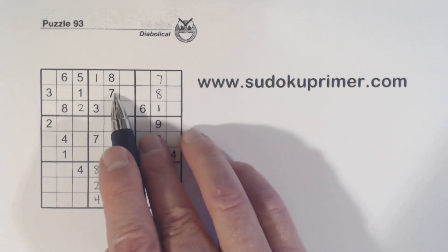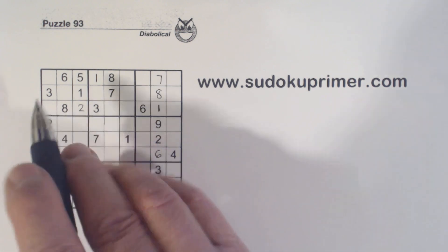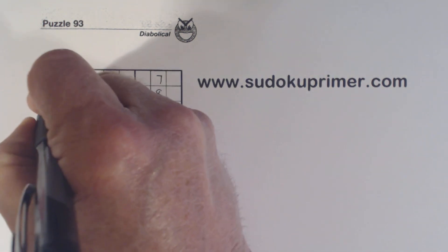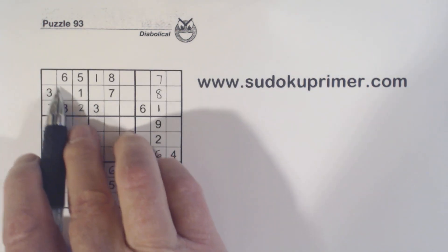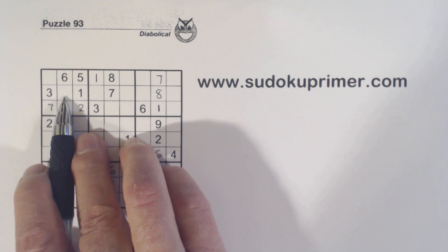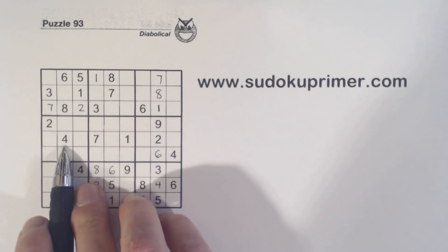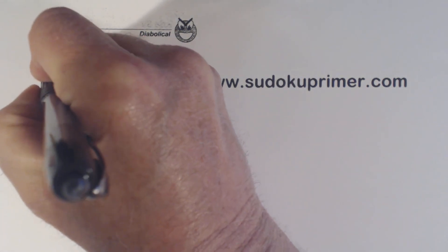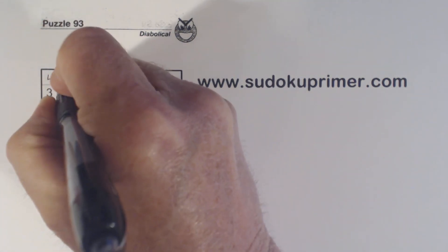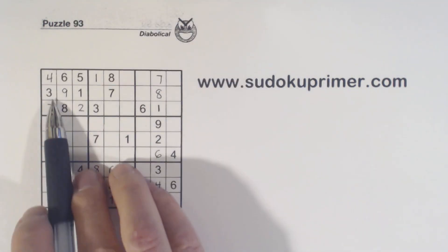We've got a seven here and a seven here, so we know that's a seven. That leaves a four and a nine here, and with this four we can fill those in and complete box one.